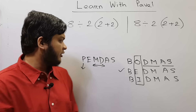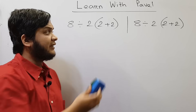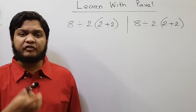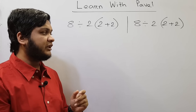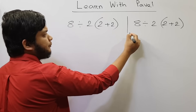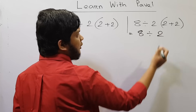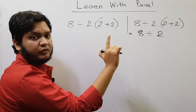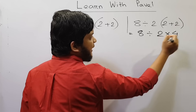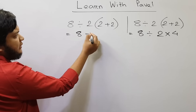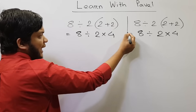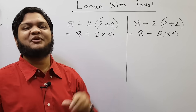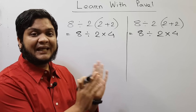Now let's solve this problem. Remember: Division and Multiplication have the same preference, but if they appear in the same line, carry out whichever comes first from left to right. So we have 8 ÷ 2(2+2). First, inside the bracket: 2+2 = 4. Whenever you have no sign in front of a bracket, you place a multiplication sign there. So this becomes 8 ÷ 2 × 4.